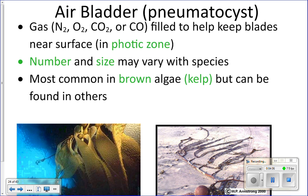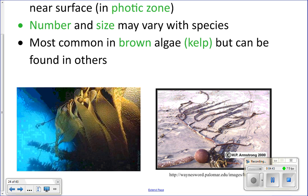The air bladder functions like a floaty for the algae — it keeps the blades up near the surface in the photic zone near the sun. Just like floaties keep a swimmer at the surface, the air bladder is filled with gas which is less dense than water, so it floats and keeps the blades up. Different types of algae have different numbers and sizes of air bladders.